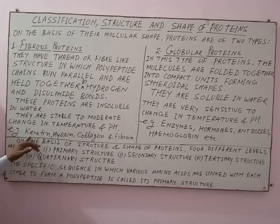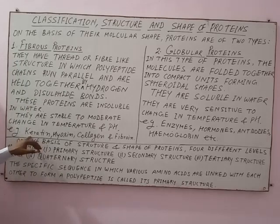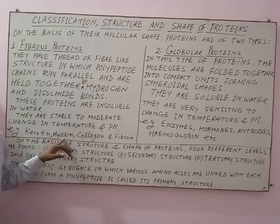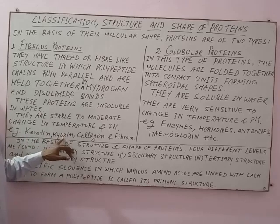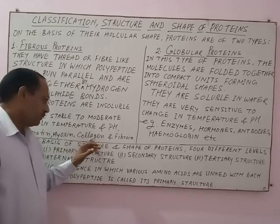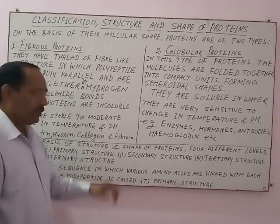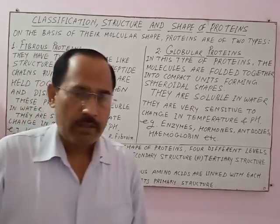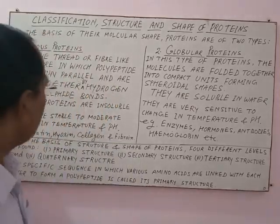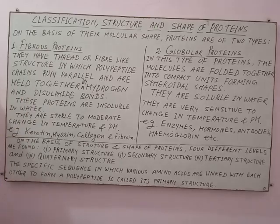For example, keratin is a protein found in hair and nails. Myosin is also a fibrous protein found in muscles, collagen is found in tendons, and fibrin is found in skin. These are all fibrous proteins.